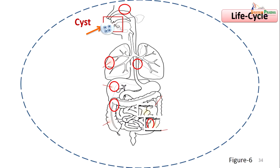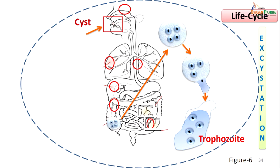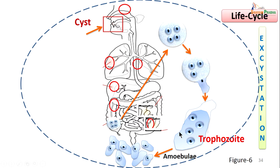Now let us learn about the life cycle of Entamoeba histolytica. It is a simple life cycle — encystment and excystment take place. The infective forms are the quadrinucleate cysts. Man consumes these through contaminated food or drink, and they locate into the large intestine, especially at the ileocecal junction, where excystment starts. The cyst wall weakens, amoeboid movements develop inside, and a trophozoite emerges. The trophozoite further divides into amoebulae — young, active forms of the parasite.